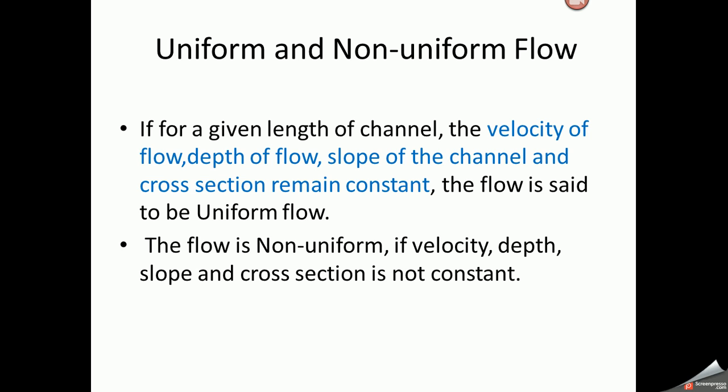Uniform and non-uniform flow: if, for a given length of channel, the velocity of flow, depth of flow, slope of the channel, and cross-section remain constant, the flow is said to be uniform flow. The flow is non-uniform if velocity, depth, slope, and cross-section are not constant; that flow is called non-uniform flow.